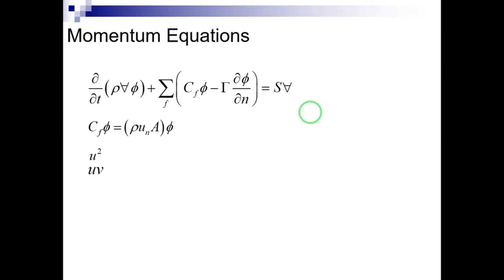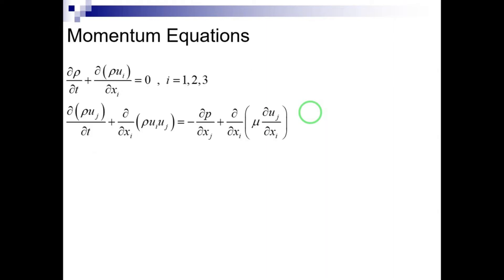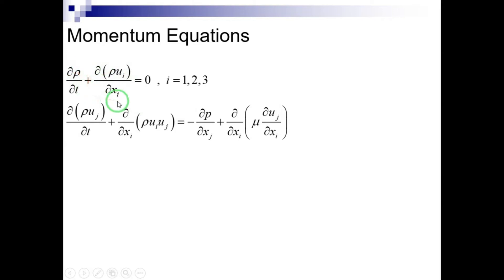Continuing the discussion, we write the equations of continuity and momentum in their differential form. As can be seen, there are four equations and five unknowns, which includes three components of velocity — u, v, and w — plus pressure and density rho.